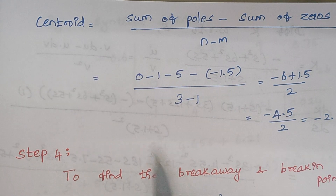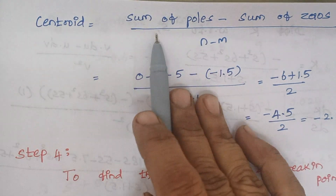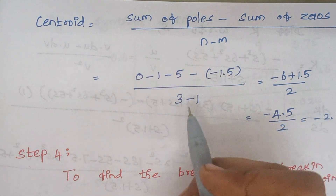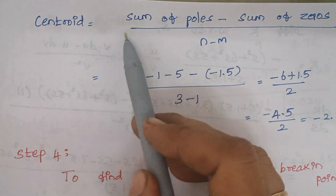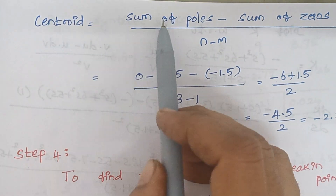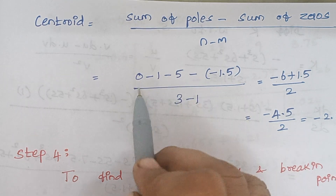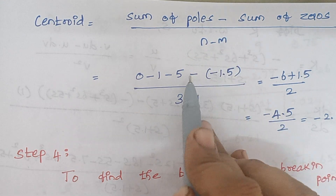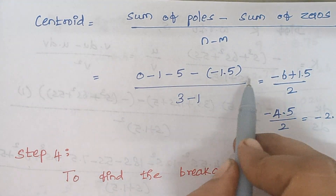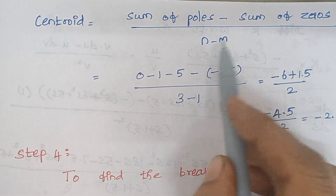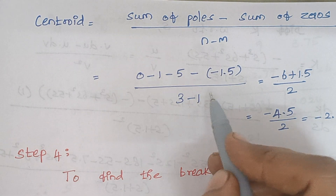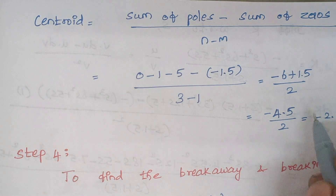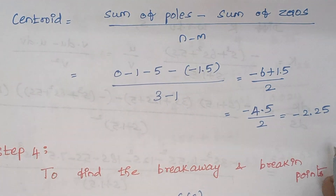Next is calculating the centroid. Centroid = (sum of poles − sum of zeros) / (n−m). The poles are 0, -1, and -5; the zero is -1.5. With n−m = 2, substituting these values gives a centroid of -2.25.